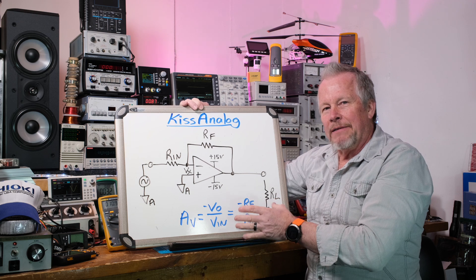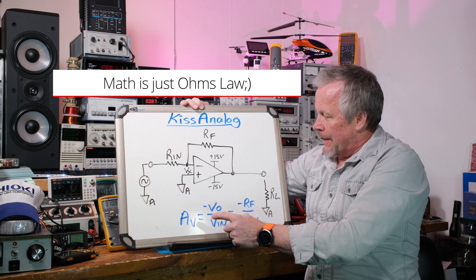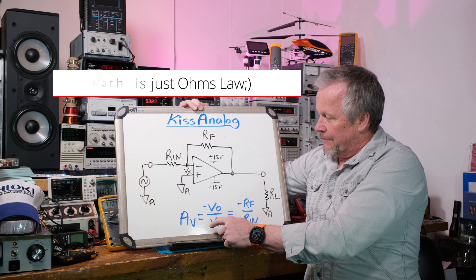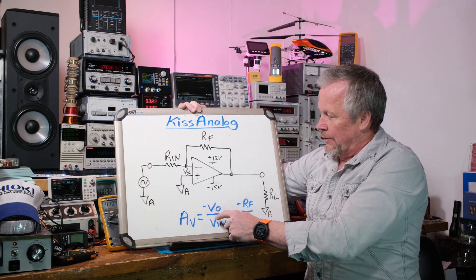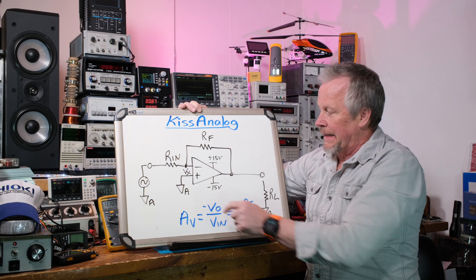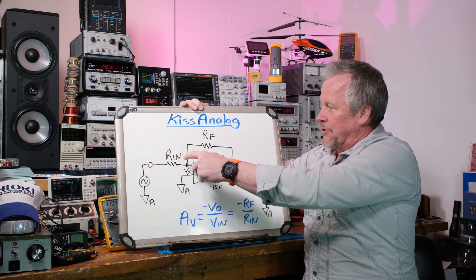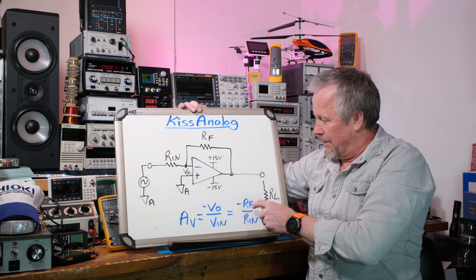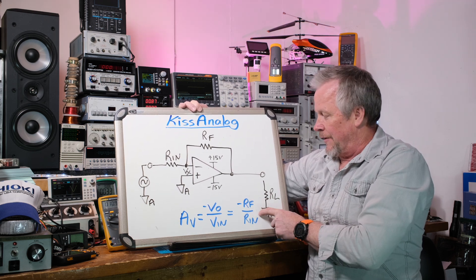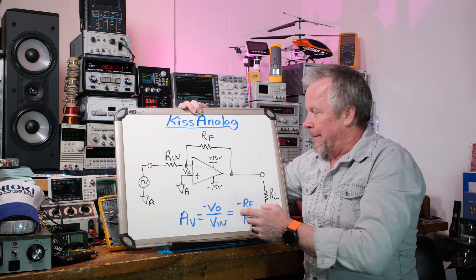I'm going to show you the math on how this actually works — it's pretty easy. The gain equation: voltage gain is output voltage divided by input voltage, and it has a minus sign because the signal is inverted. It turns out the gain is minus RF divided by RN — the feedback resistor divided by the input resistor. Let's talk about why.